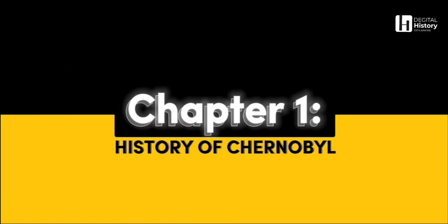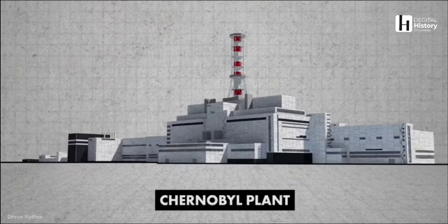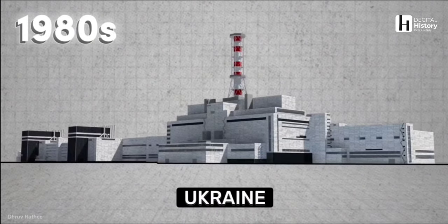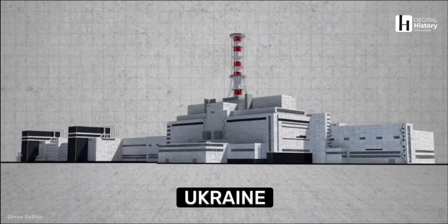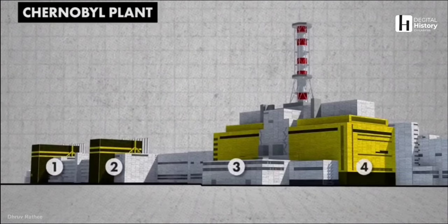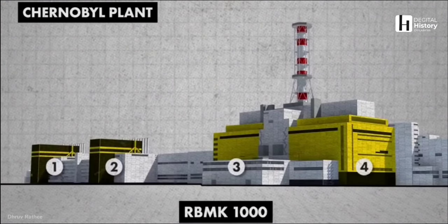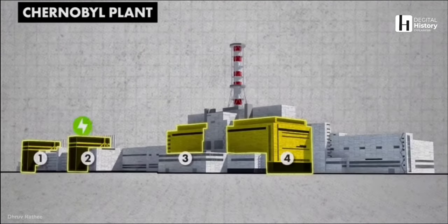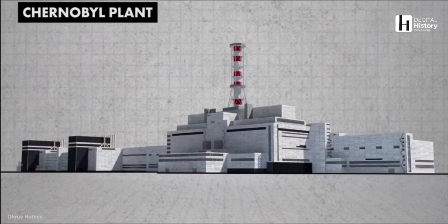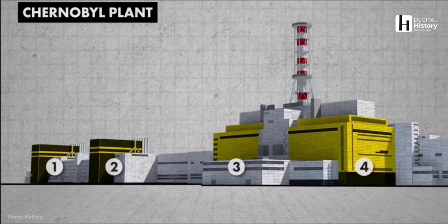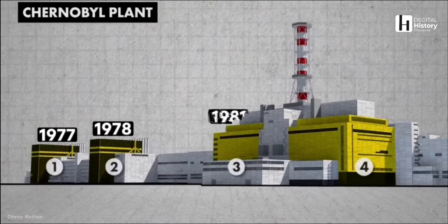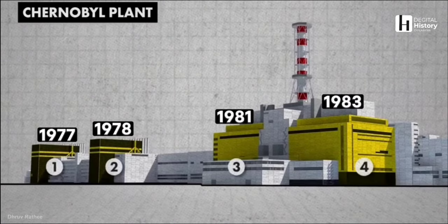The History of Chernobyl. The Chernobyl nuclear power plant was built during the 1970s and 1980s in Ukraine, then part of the Soviet Union. It was one of the largest nuclear power plants in the world, with four RBMK-1000 reactors. These reactors were designed to generate electricity and plutonium for the Soviet's military purposes. Construction of the plant began in 1970, and reactor number one was commissioned in 1977. By the end of 1983, four reactors were operational.